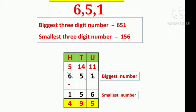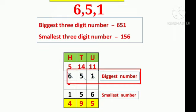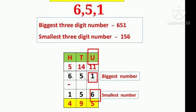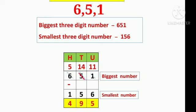We subtract these numbers one from the other. First we draw the columns: hundreds, tens, units. We write the biggest number: 6 hundreds, 5 tens, 1 unit. Minus: 1 hundred, 5 tens, 6 units. We start subtraction from the units place. Here in units place: 1 unit minus 6 units. We cannot subtract 6 from 1 unit. So we untie 1 ten from 5 tens. We strike out 5 in the tens place and write 4 above it. Then we strike out 1 in the units place and write 11 above it.